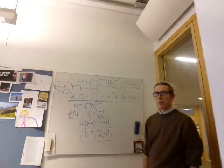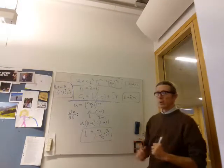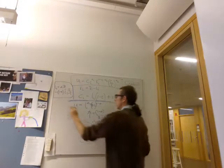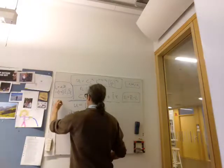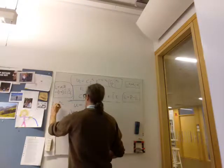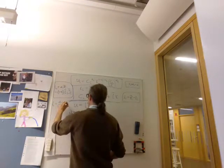So far so good. We want L equal to alpha 1 over 1 minus alpha 2, R.